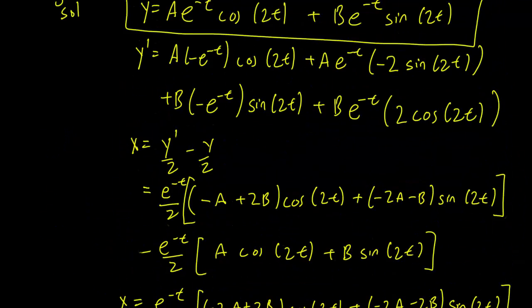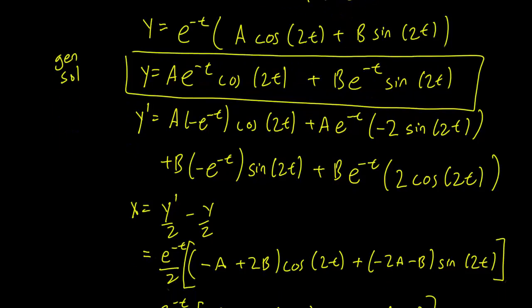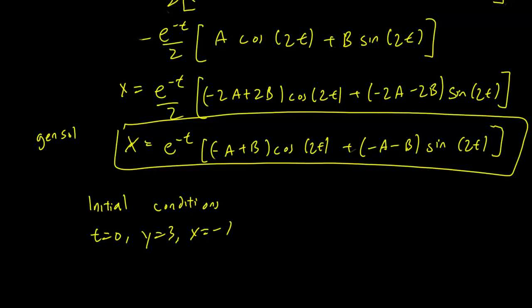At t equals 0, the e^{-t} becomes 1, cosine 0 is 1, and sine 0 is 0. So setting y equals 3 at t equals 0, we get that a equals 3. That gives us our first constant.